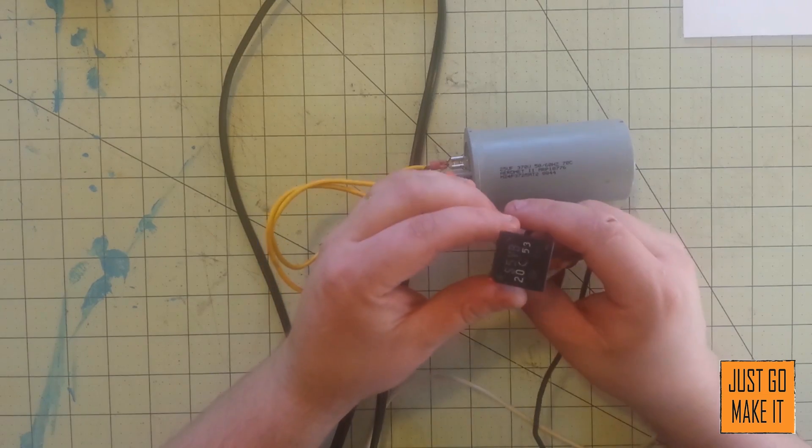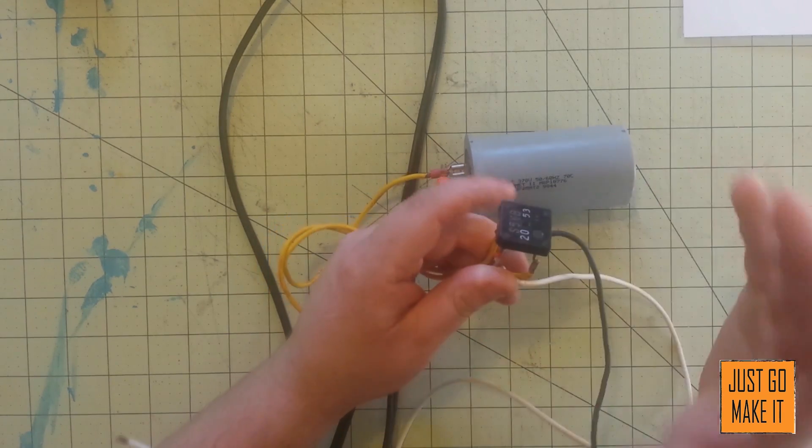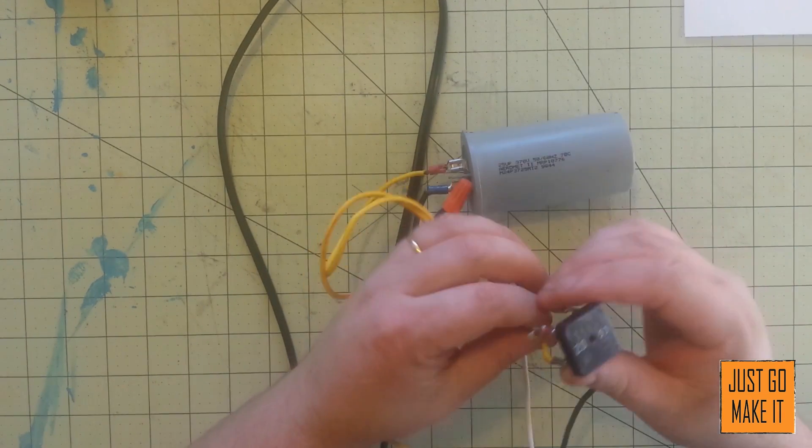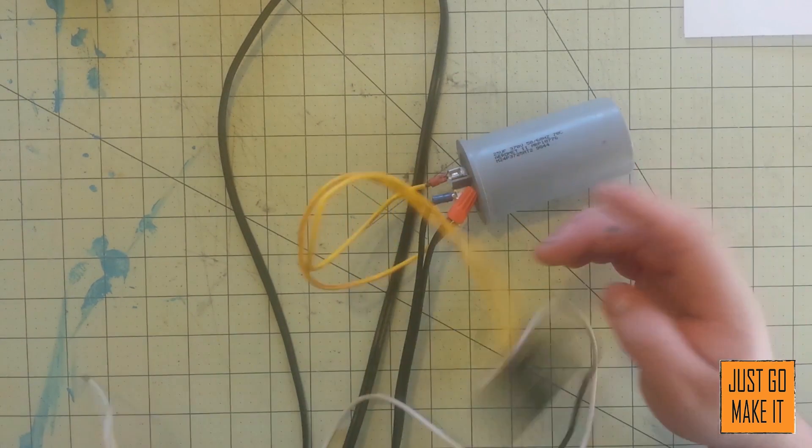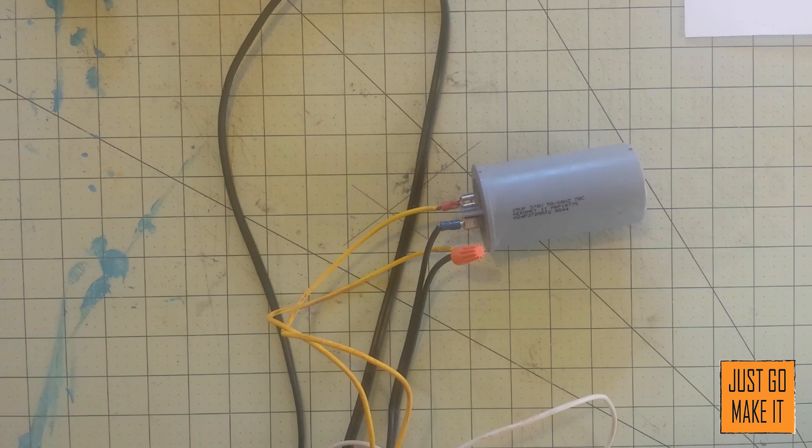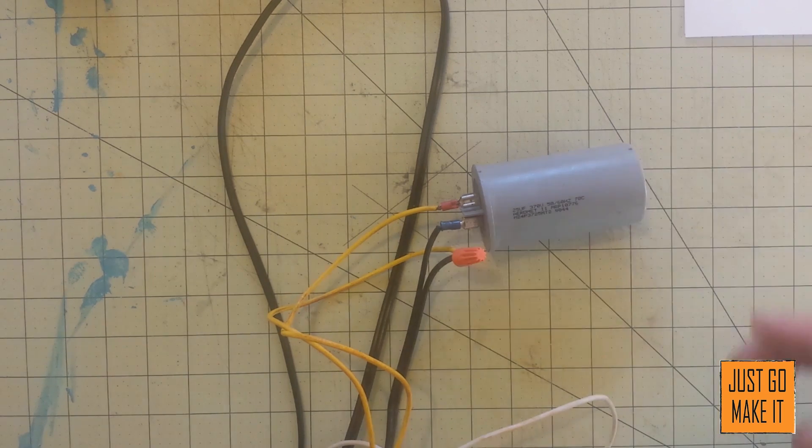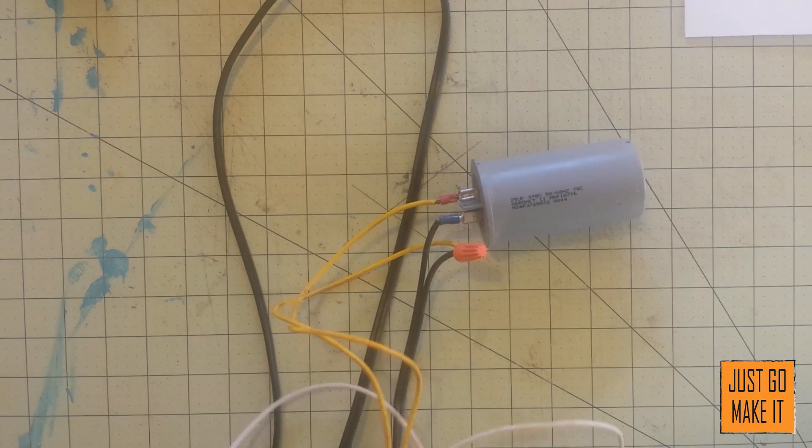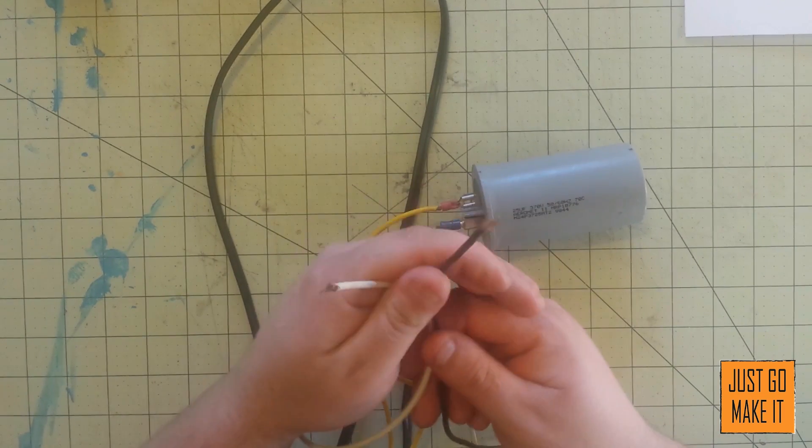And I also have my bridge rectifier right here. It's got the two AC connections, the positive, and the negative. This here I tore out of probably a power supply someplace. The higher the amperage one you can find, the better. Technically, one of these chargers could put out 100 amps if you really wanted to. Anyways, I have not put any clips on it, but the white's my positive side and the white's my negative side for charging batteries.